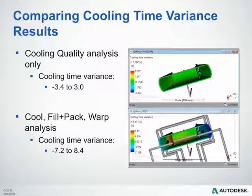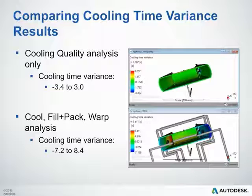Comparing cooling time variance: the cooling quality analysis showed a variance from −3.4 to 3 on the scale. Running a cool, fill, pack, and warp analysis produced a much worse result at −7.2 to 8.4. The cooling quality analysis is a great preliminary tool to identify key trends and problematic areas; however, the cool fill pack warp analysis is much more suitable when further along in the design process, as it provides more accurate information on what will happen in reality.